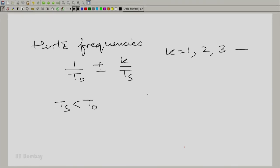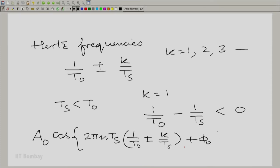If you take the possibility, let us say for example, the positive k equal to 1. Now, 1/T_0 minus 1/T_s would be negative because 1/T_s is greater than 1/T_0. Now, we do not want a negative frequency. So, what correction can we make? Go back to the original expression, A_0 cos 2π nT_s (1/T_0 ± k/T_s) + phi_0. This is the expression.